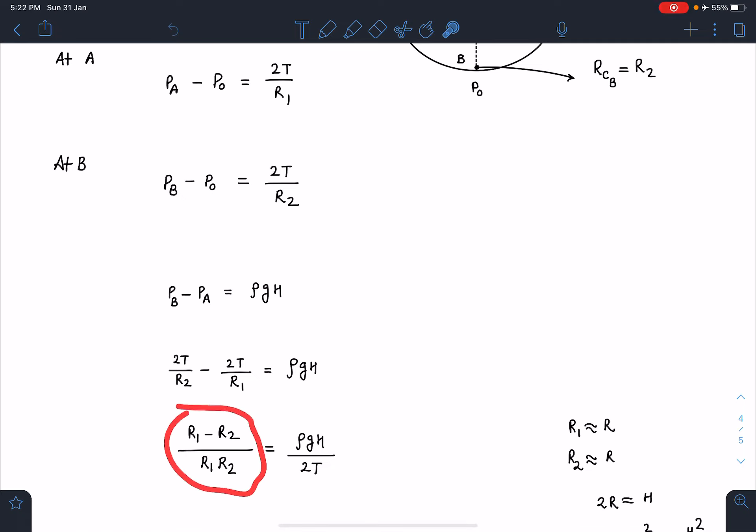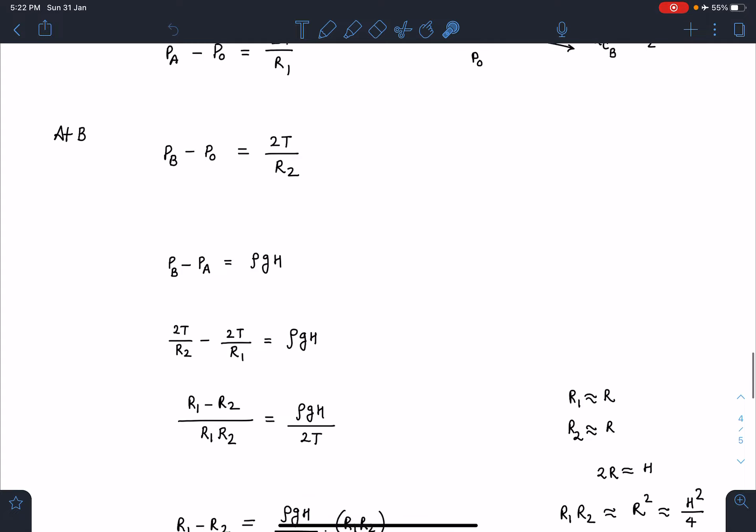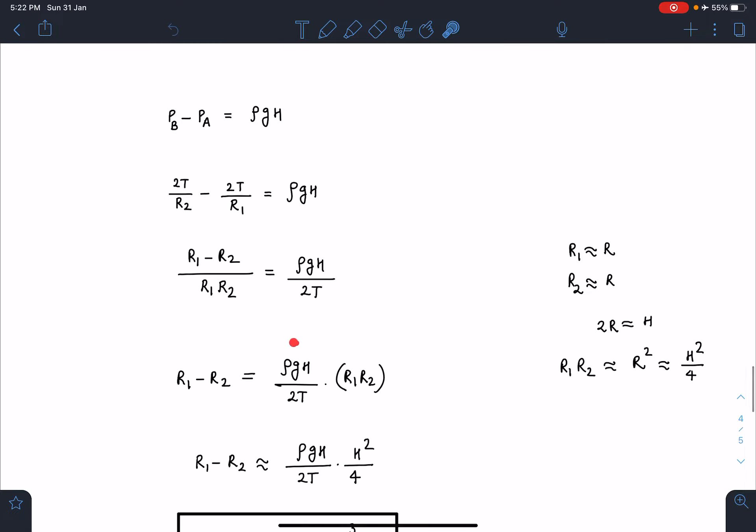If I rearrange these terms, I will be getting R1 minus R2 divided by R1·R2 equals ρgh/2T. So R1 minus R2 equals (ρgh/2T) times R1·R2.